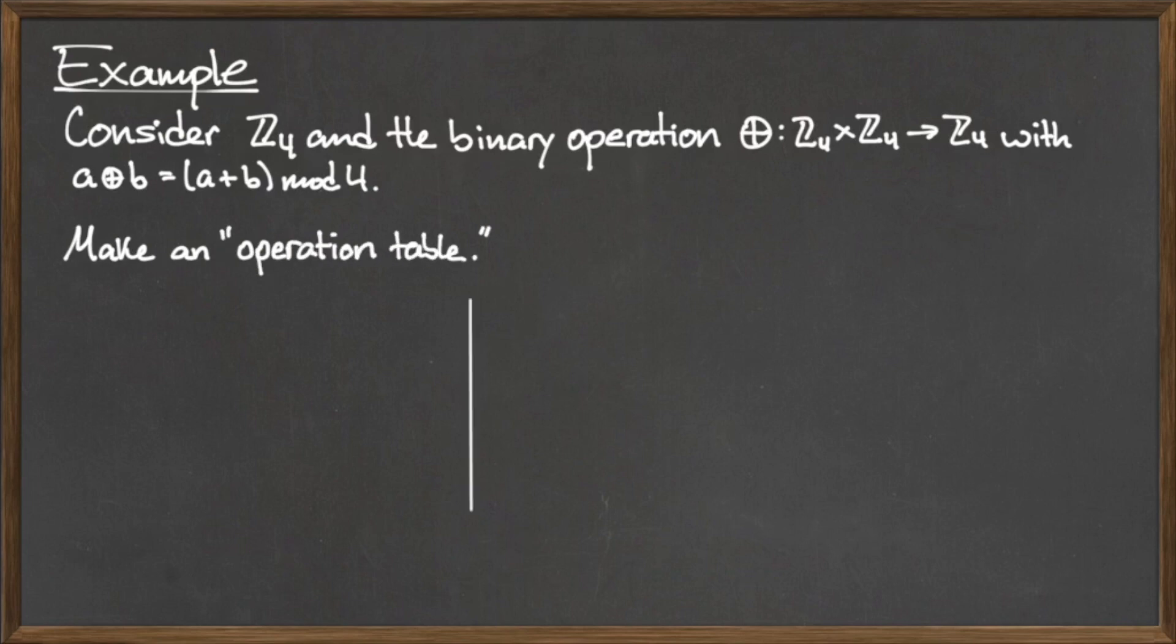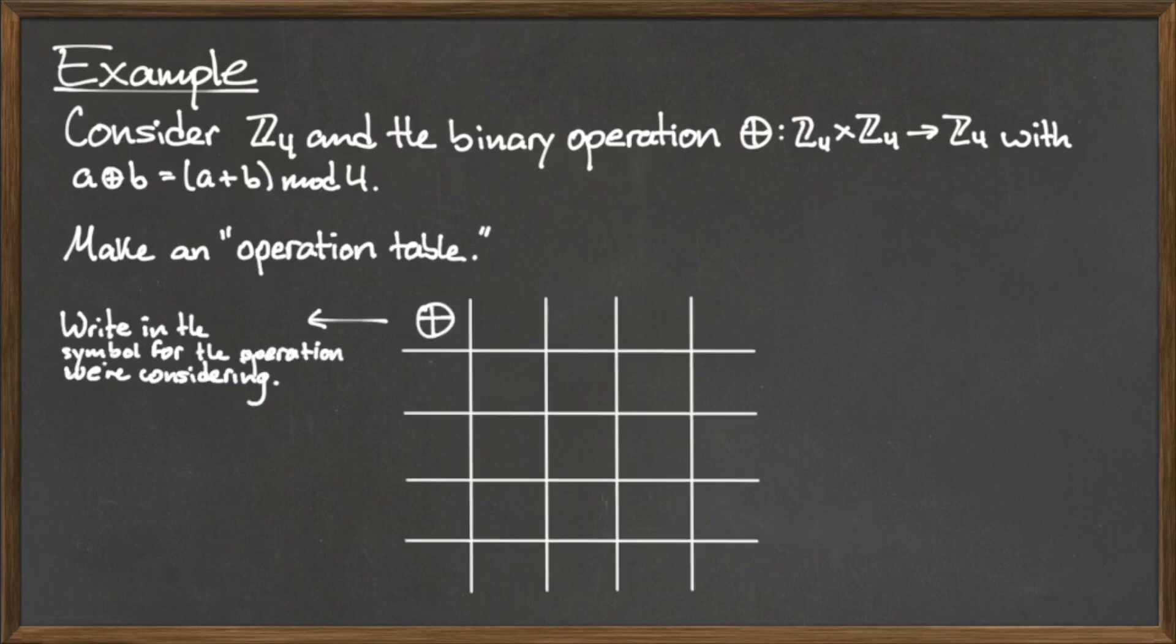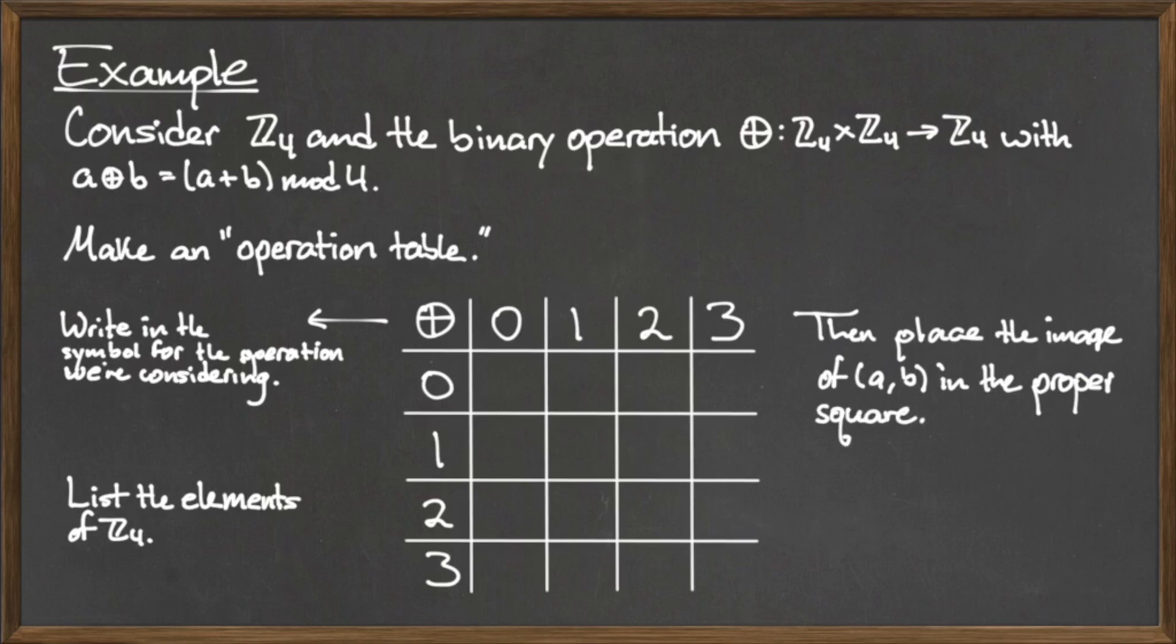To see how this binary operation works, we can arrange all of the elements in Z₄ in a table like so. In the upper left corner, we write the symbol for the binary operation that we are considering, which in this case is ⊕. The numbers written directly beneath the ⊕ symbol represent the possible values for the input element a, b.